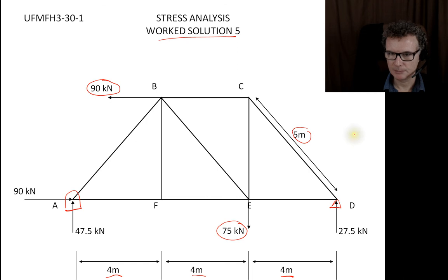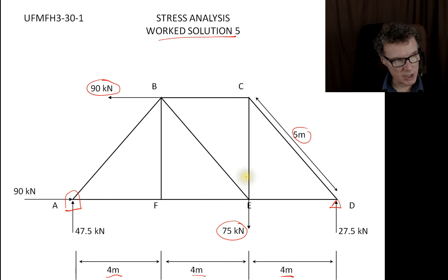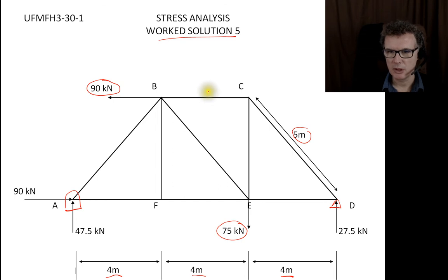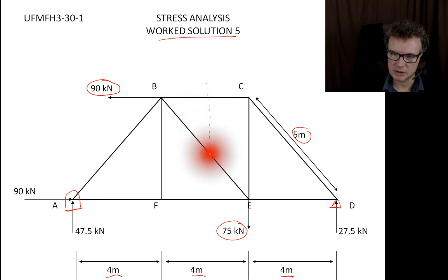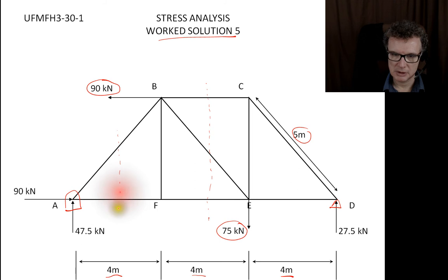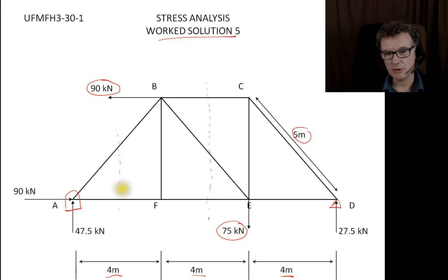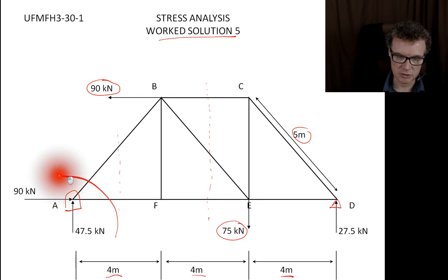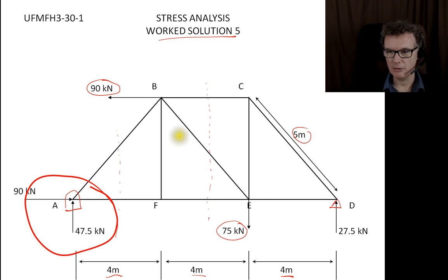We're going to use the method of sections. I'll cut through my framework — I can only cut through three members. If you took a cut through certain members you'd be cutting only through two, and you could argue that's either method of sections or method of joints, since method of joints takes a cut around the joint. For this particular example there's actually only one natural place to cut.